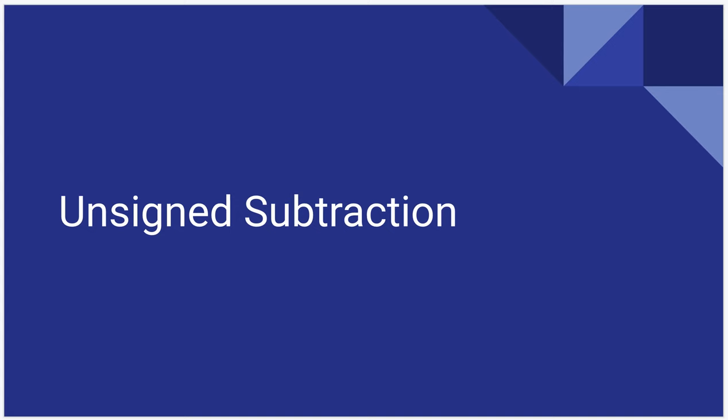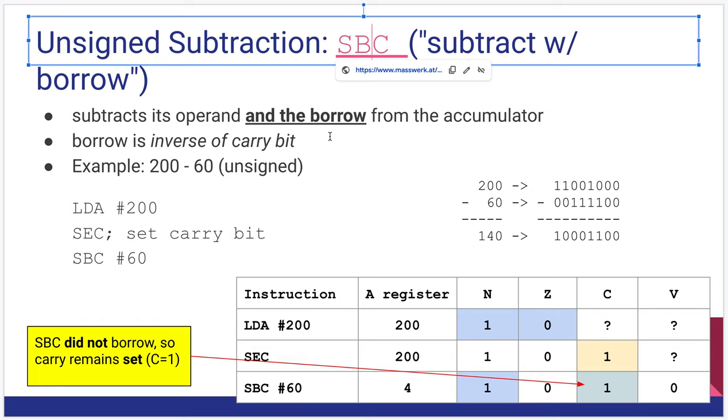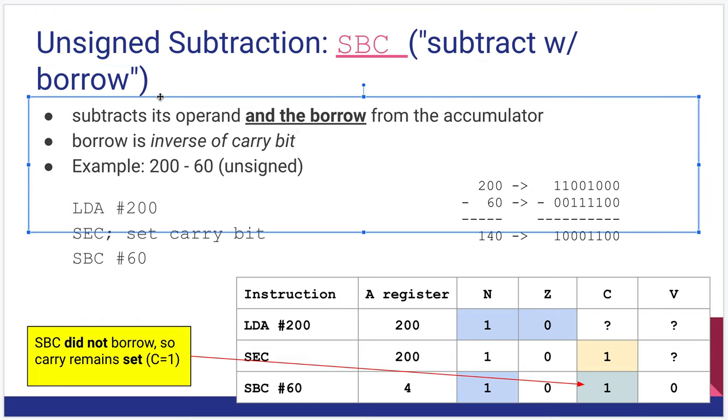Let's move on to unsigned subtraction. The instruction here is SBC, subtract with borrow. Borrow is related to the carry, which is why they use the C here. So when we have SBC, it subtracts its operand and the borrow from the accumulator. The weirdness here is the borrow is the inverse of the carry bit. So if the carry is set to zero, then we have a borrow of one. If the carry is set to one, we have a borrow of zero.